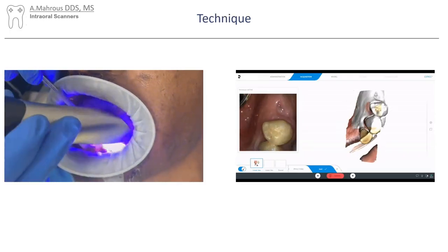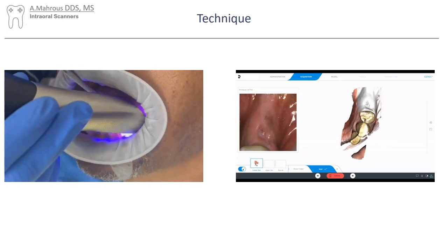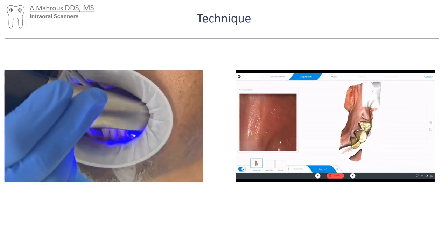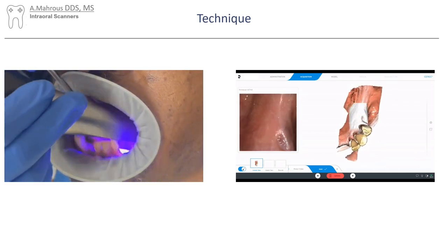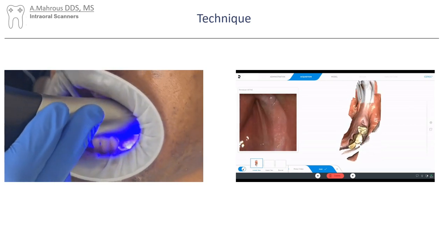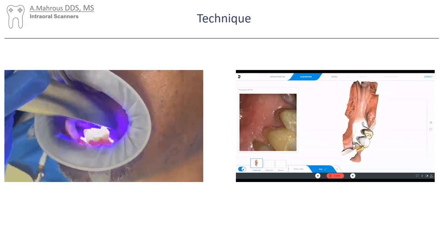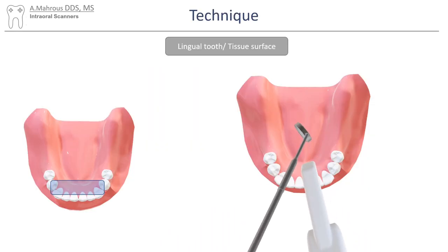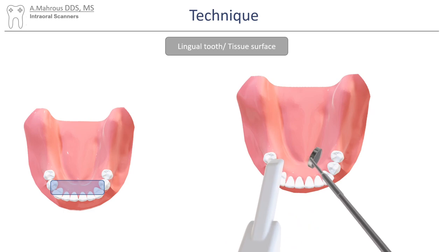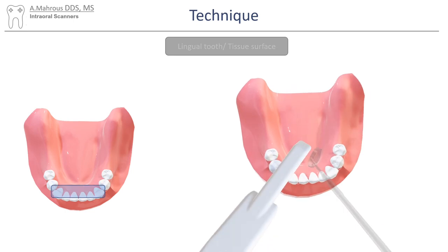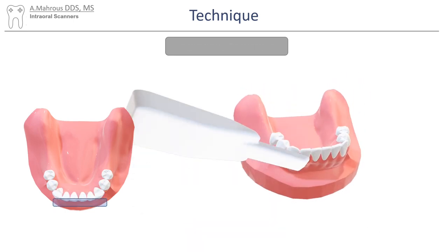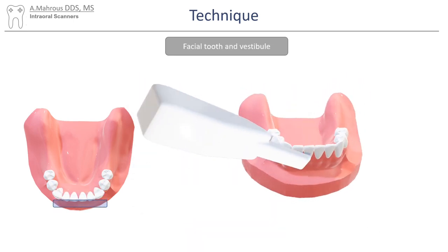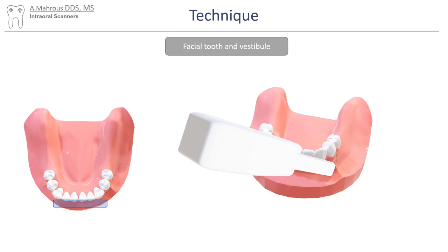Here's a video capture of this area being scanned in a real patient. The lingual surface of the anterior teeth is then scanned, along with the soft tissue next to it. The mirror can still be used to retract the tongue at this stage. Finally, the anterior vestibule is scanned. The opturgate should be effective at retracting the lip at this stage.